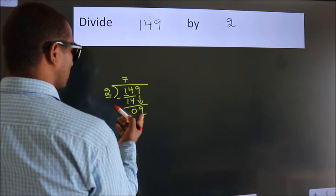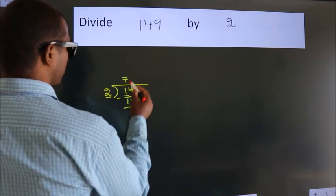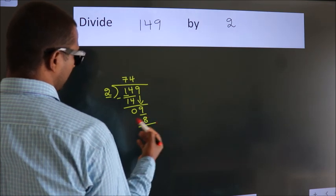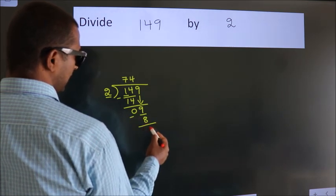A number close to 9 in 2 table is 2 fourths, 8. Now we subtract. We get 1.